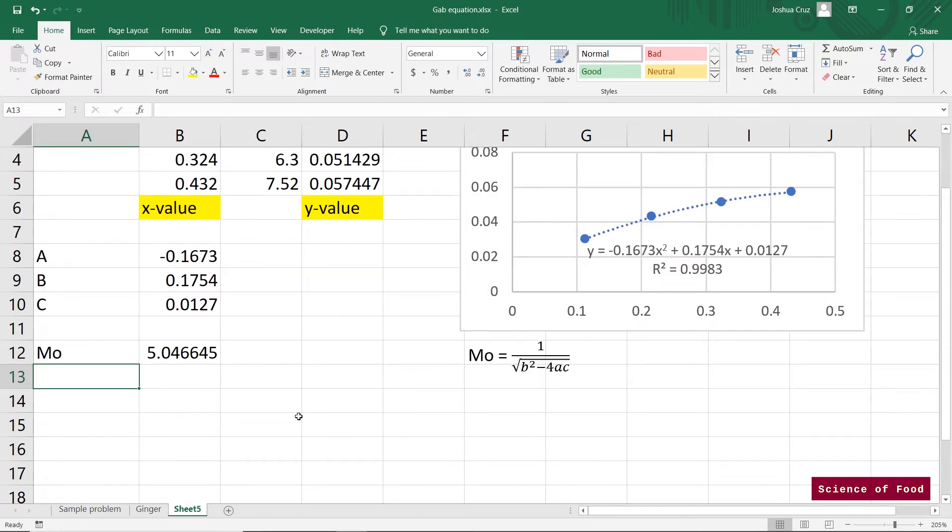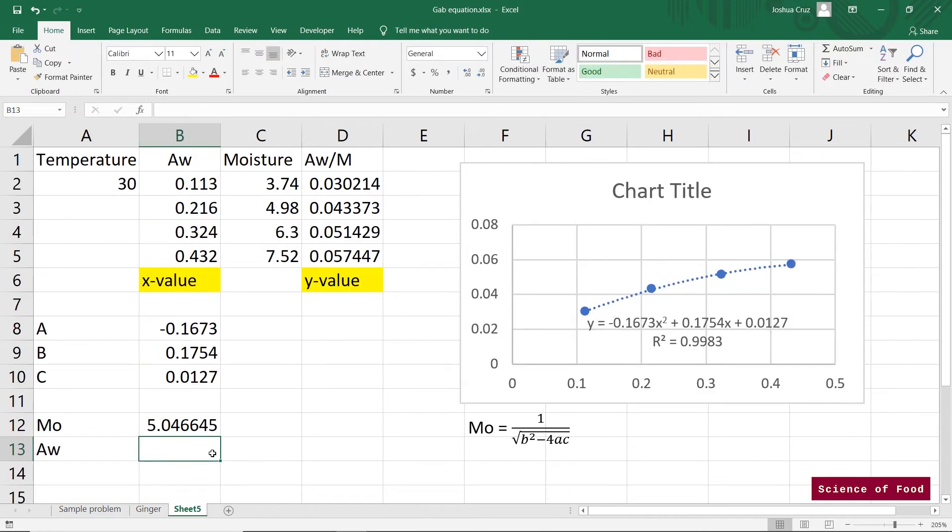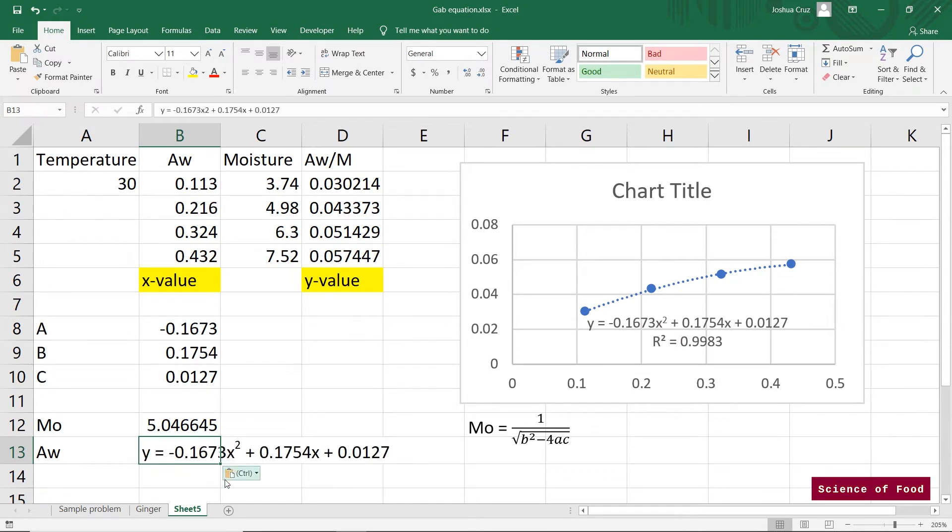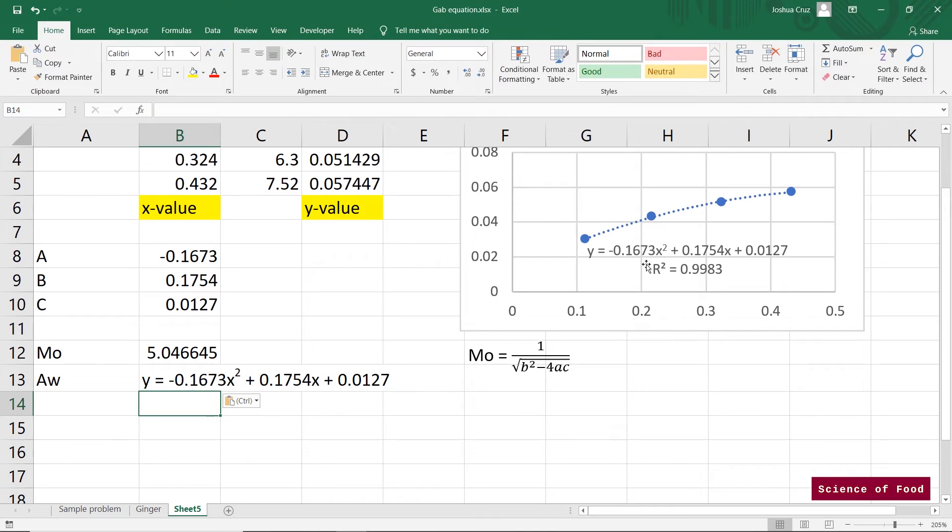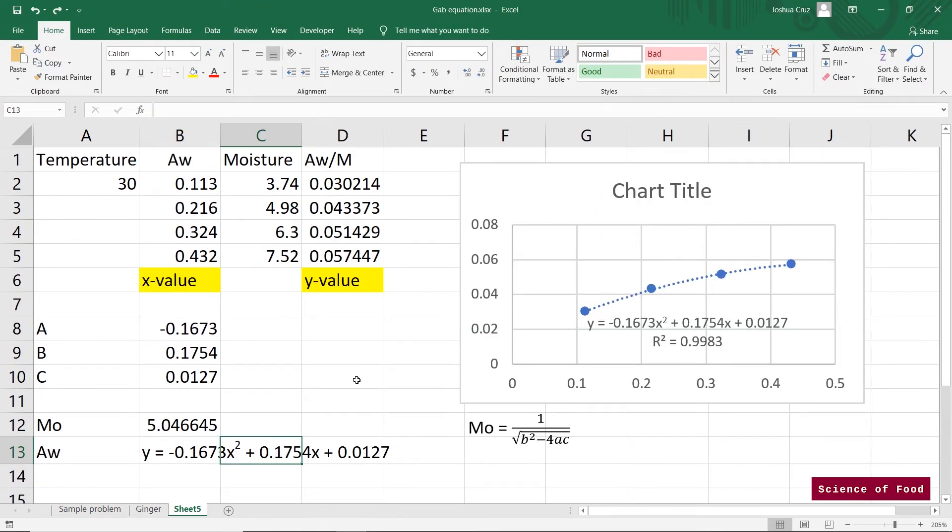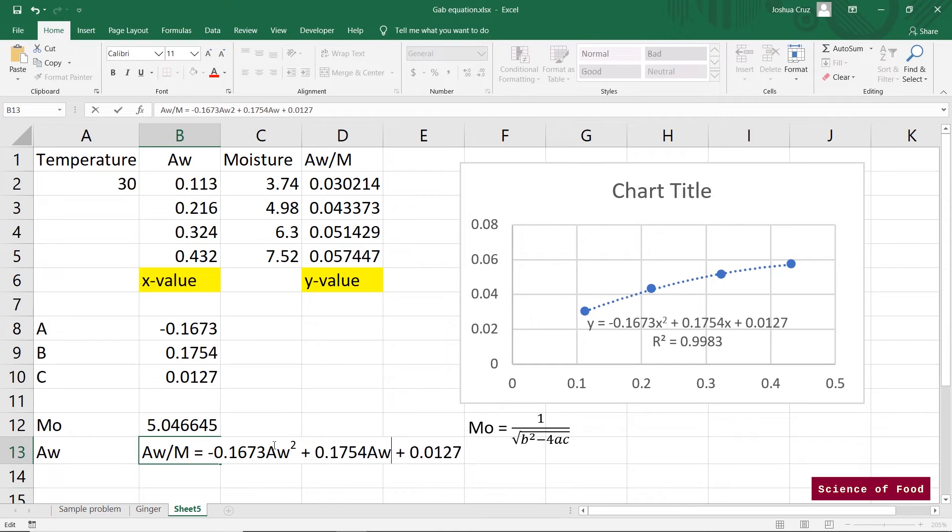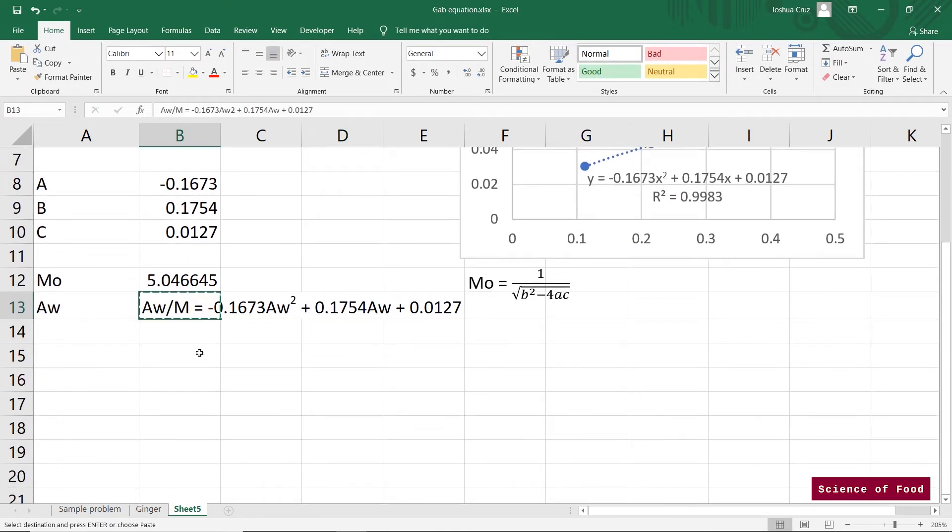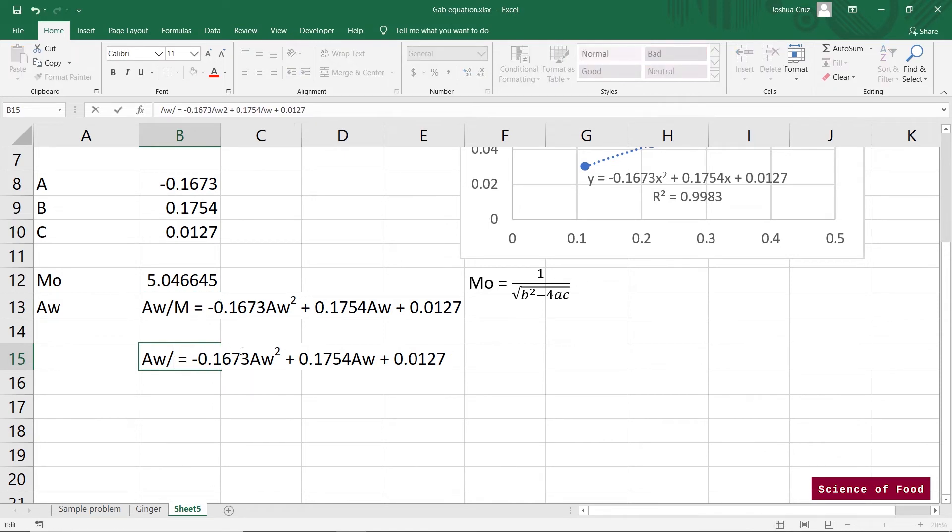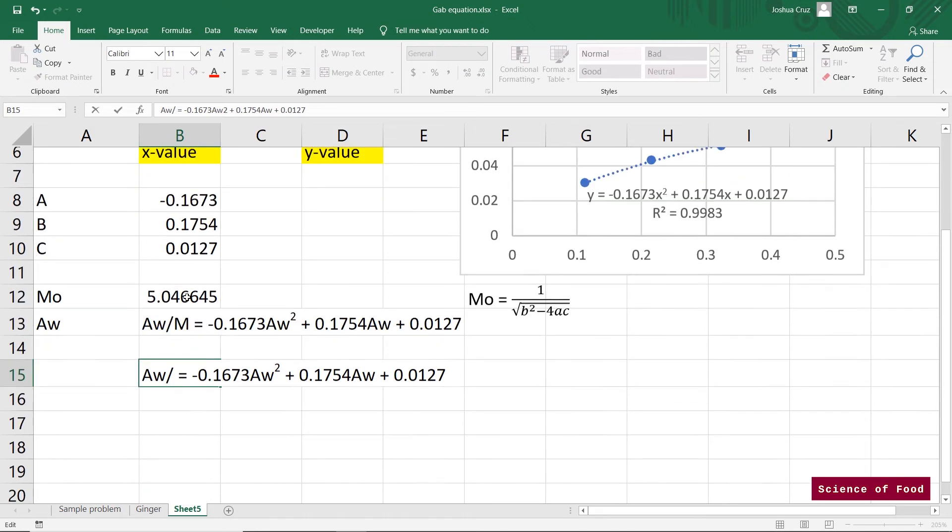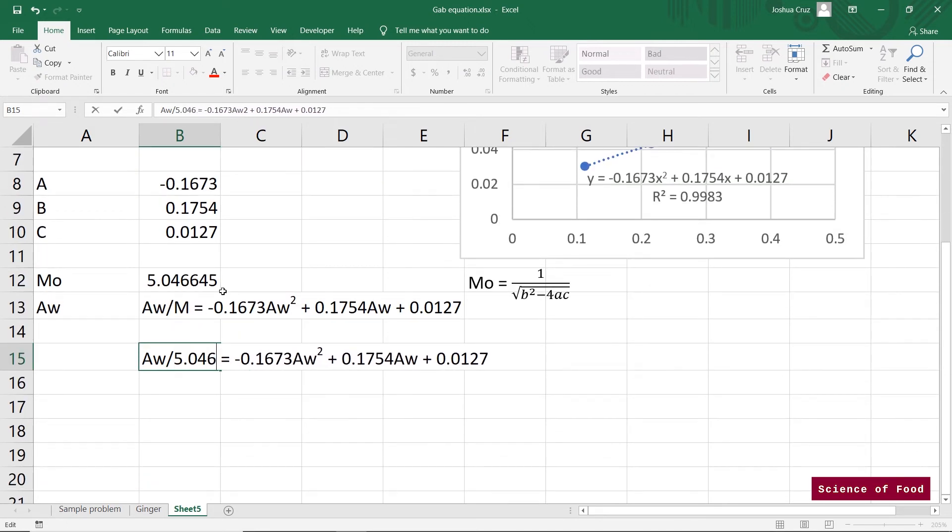So the next thing that we need to calculate is the water activity. So again, we're going to use this equation. And I got this from the equation of the line. And from this equation, we can substitute y with the water activity divided by moisture content. So let's just do that. And our x values here is our water activity. So substitute that and this also. So we'd have something like this.